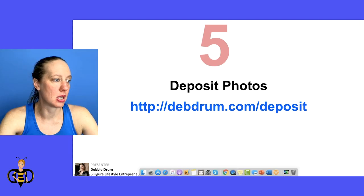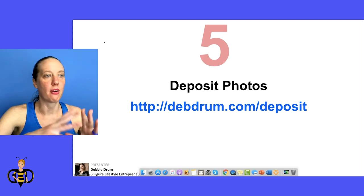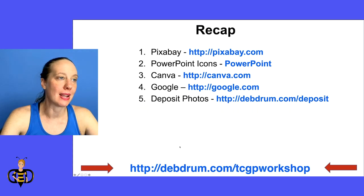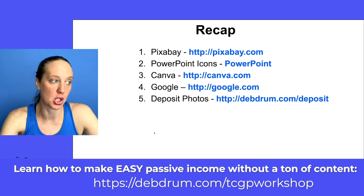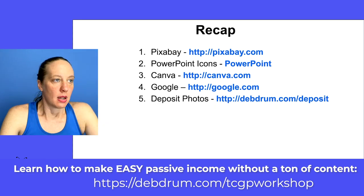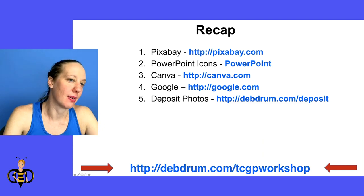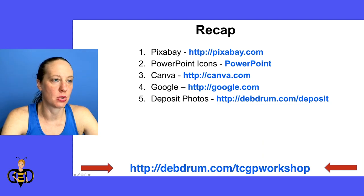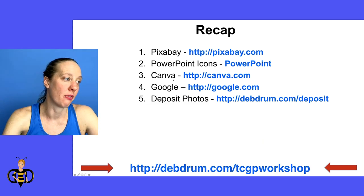So it's not that hard when it comes to images — don't get caught up in this. It's nice to have set resources where all you do is go to one of five places. If you want to go deeper into how to make digital products and make money with them, check out my workshop called Tiny Content, Giant Profits at debdrum.com/TCGP-workshop. To recap the five resources: Pixabay, PowerPoint icons, Canva, Google — very limited, but know you have that option — and the ultimate option is Deposit Photos, whether you're paying one time or on the monthly membership.